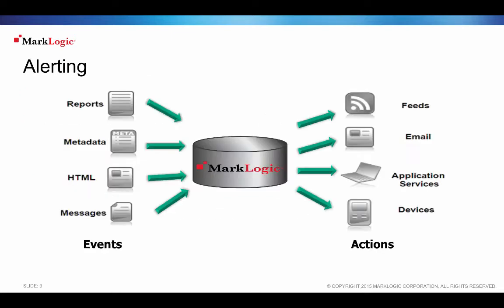Companies are increasingly dealing with ever-growing volumes of fluid information. Users often need information as soon as it's available. As information ages, its value rapidly decreases and late delivery of critical information negatively impacts responsiveness. This delayed response may lead to lost opportunities. Consider consumer technologies like Twitter, Google Alerts, or mobile devices — all add immediacy to information delivery.